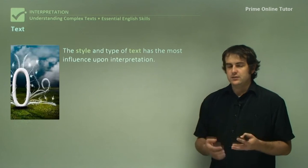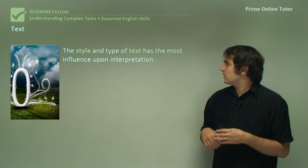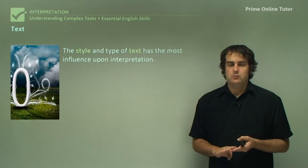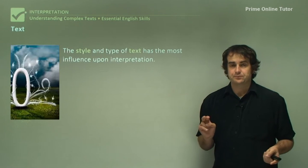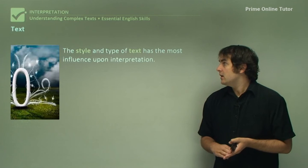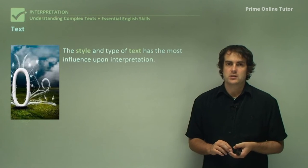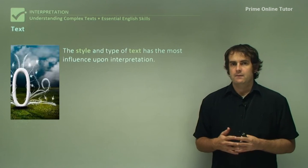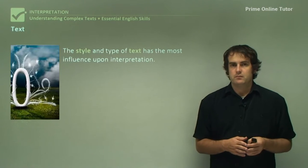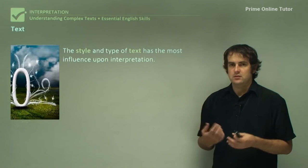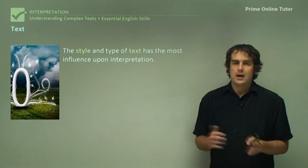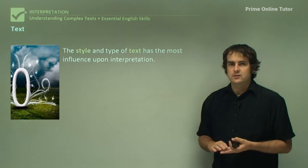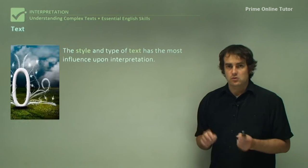Starting with text: this basically looks at the style and the text itself. So if it's a film, an image, a poem, or whatever it may be, that has a huge influence on how you interpret it — especially through the mediums, because the mediums you'd be looking at represent things far more differently than anything similar. If you look at how something is presented through a different kind of text, it's going to be interpreted very differently. The style is very important, and the type of text is also quite important.